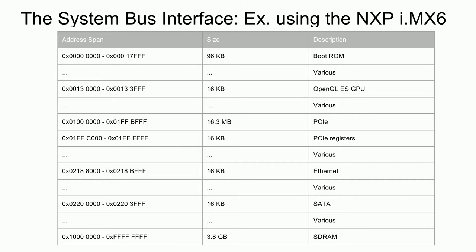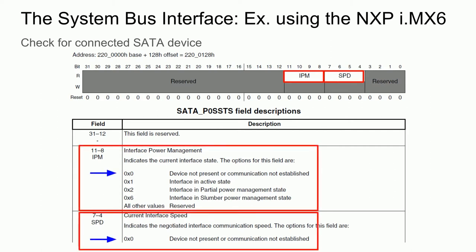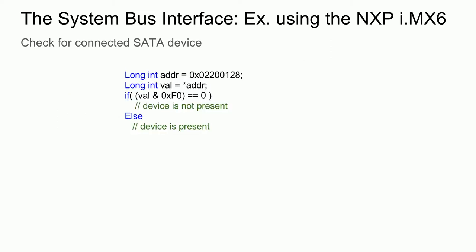These are the addresses where the processor looks for code to execute when the CPU is first turned on or reset, as well as other types of exceptions. This is why the boot ROM starts at address 0. Note that the exception vector can be relocated out of the boot ROM at runtime. To push this example further, consider the case of trying to find out if there is a SATA device connected to the SATA port on the IMX6. To do this, we want to go to the SATA physical status register at address 0x220-0128. Here we can look at either the interface power management or current interface speed fields, where we expect the value to be non-zero if the device is present. This can be done with the following C code. It's as simple as reading from an address, and the CPU doesn't know and doesn't need to know that the address corresponds to the SATA port.